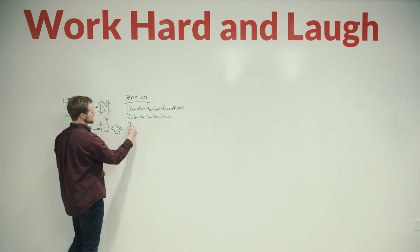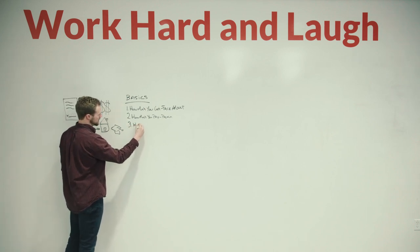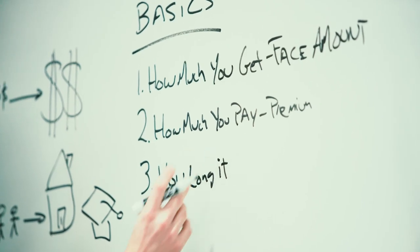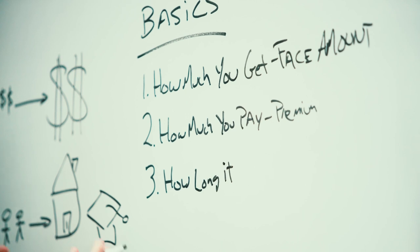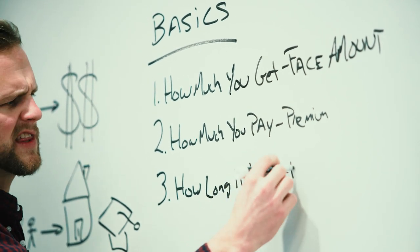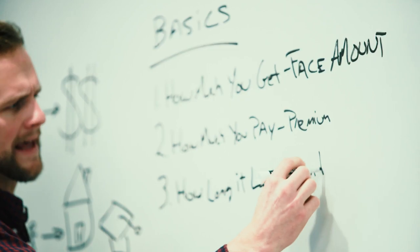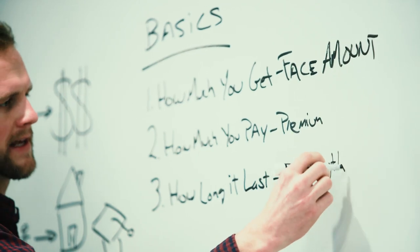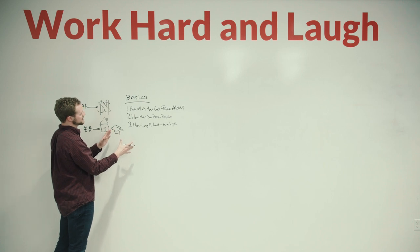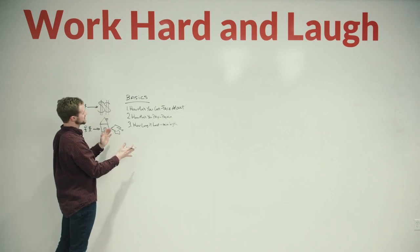The third thing to keep in mind is how long it lasts. In general, it can last for a specified period of time or it can last until you die no matter what. Think of this as term length. That's what they call it in the business. These are the basic components of the life insurance policy that you need to understand in order to make a good decision.